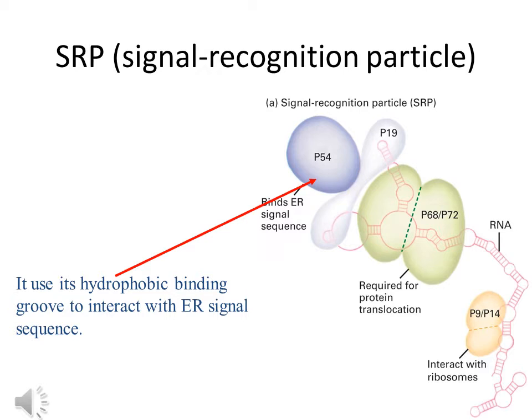The signal recognition particle consists of RNA as well as proteins, with different functional domains. The p54 domain binds to the ER signal sequence, using a hydrophobic binding groove to interact with it. Several other domains exist: p19, p68, and p72. p68 and p72 are involved in protein translocation, while p9 and p14 are responsible for interacting with the ribosome. An RNA component is also present.